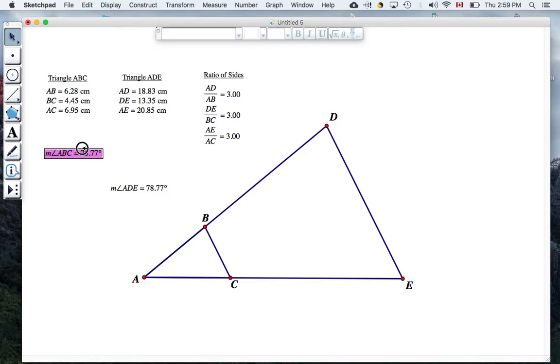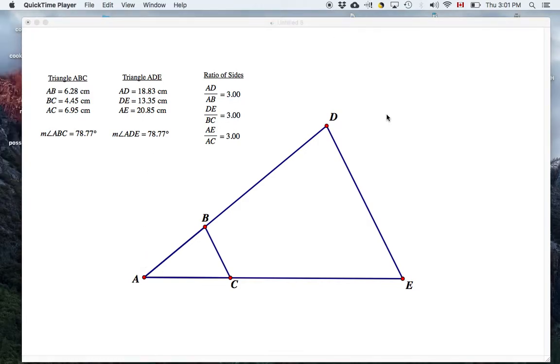So what I can do actually is I can put those right up here on my sheet under the triangle ABC and triangle ADE. So you guys can measure the other corresponding angles, like BCA and DEA, and see if those work out to be the same as well.